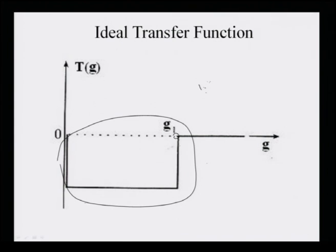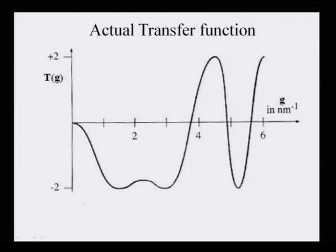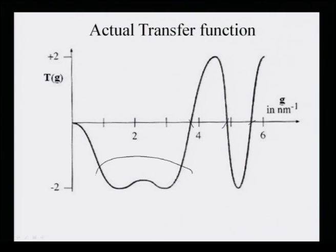This ideal situation is never really achieved because all microscopes will have defects, and those defects change the transfer function drastically. The actual transfer function T(G) as a function of G can vary from plus 2 to minus 2, and there are not only more zeros but also the values at different spatial frequencies are changing. There are higher order and lower order values of the transfer function.